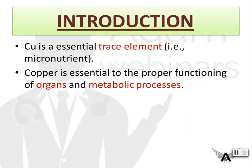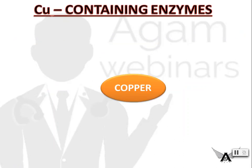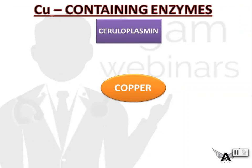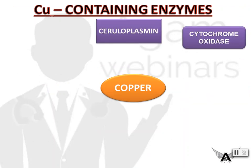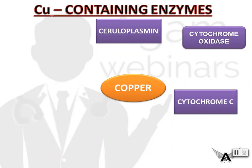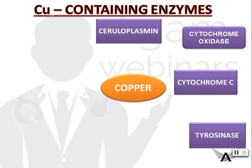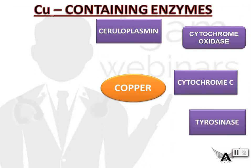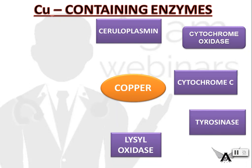Copper is an essential trace element — a micronutrient — required for proper functioning of organs and metabolic processes. Copper-containing enzymes are ceruloplasmin, cytochrome oxidase, cytochrome C, tyrosinase, lysyl oxidase, laccase, and monoamine oxidase.